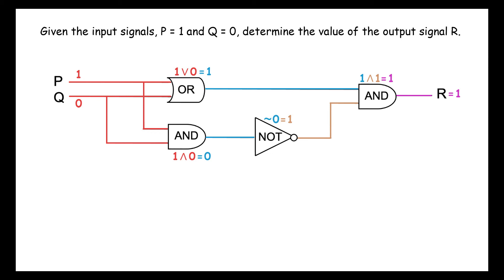Now that we have found the output signal, we should note that this is not the most efficient way to determine the value of an output signal. Suppose the values of the input variables change. For example, if p equals 1 and q equals 1, we would need to trace through the circuit again to determine the value of the output signal R.